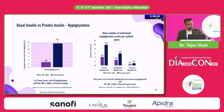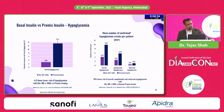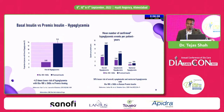Two important studies compared basal insulin versus premix insulin for incidence of hypoglycemia. One study had patients on sitagliptin given glargine versus premix insulin twice a day. Glycemic control was more or less similar in both arms, but the risk of hypoglycemia was almost 4.5 times higher in the premix twice-a-day regimen compared to the glargine regimen. The number of patients reaching HbA1c less than 7 was similar, but overall, symptomatic, and nocturnal hypoglycemia were all much lesser in the glargine arm.